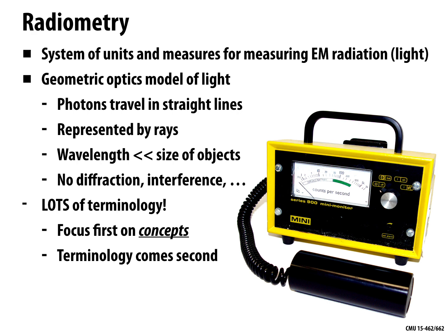In the geometric optics model, photons travel in straight lines through space, so we can represent them geometrically as rays. That's why we spent so much time on ray-scene intersection. We also assume the wavelength of light is much smaller than the size of the objects in our scenes, so we don't have to worry about diffraction and interference. There's going to be lots of terminology in radiometry.